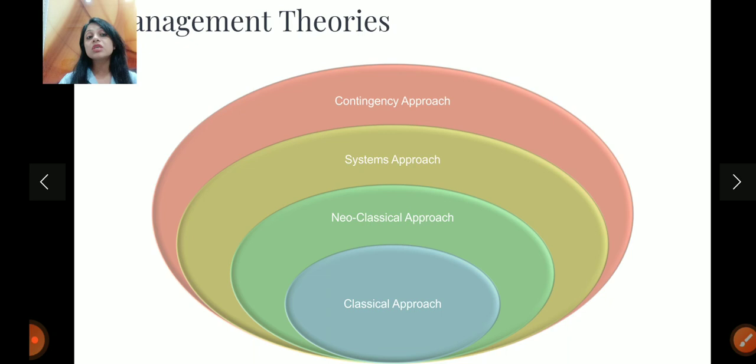After that, we have a systems approach when we look at management as a system. And then in today's world, we can say modern theories. Now we have the contingency approach. So these are the four broad heads which we can classify the management theories.